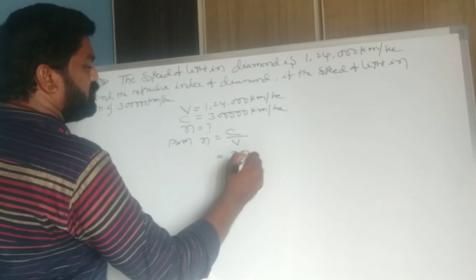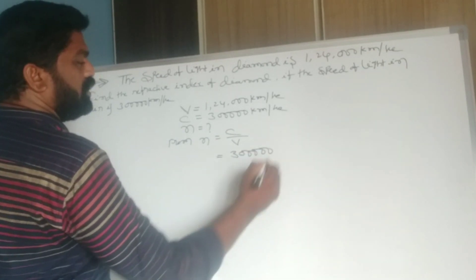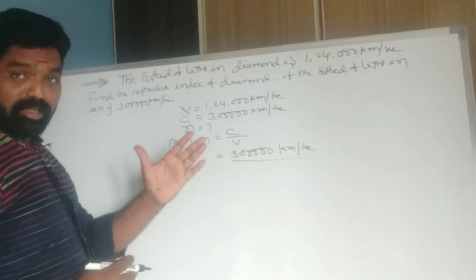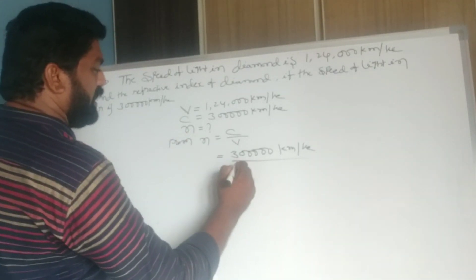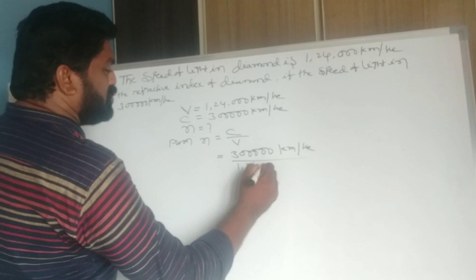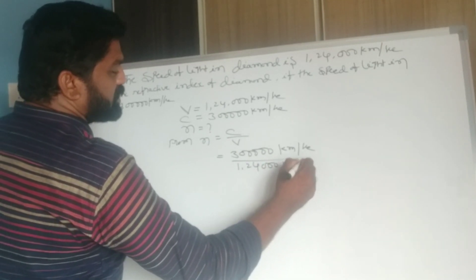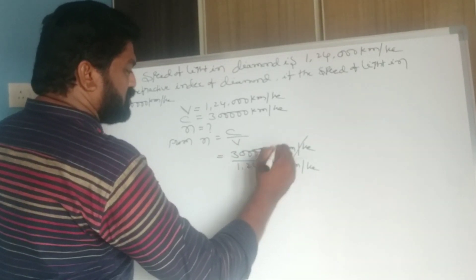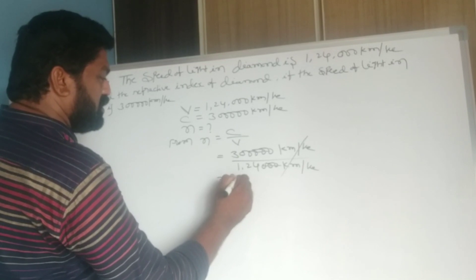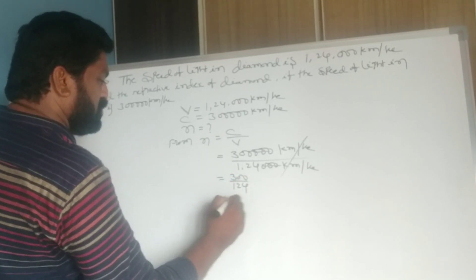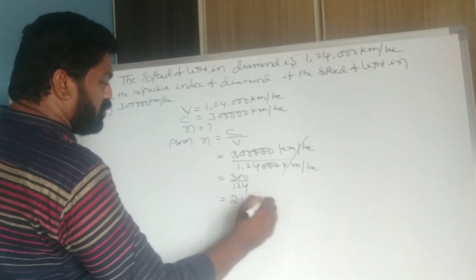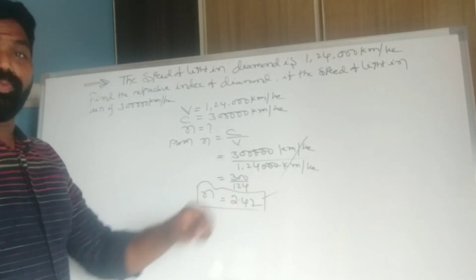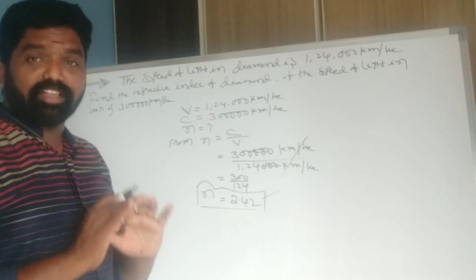Here C is 3,00,000 kilometers per second, which is 3 × 10⁸ meters per second, divided by 1,24,000 kilometers per second. The kilometers per second cancel, and three zeros cancel on each side, leaving 300/124, which is approximately 2.42. The refractive index of diamond is 2.42. Note that refractive index has no units.